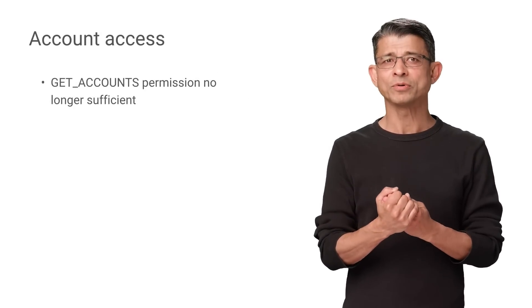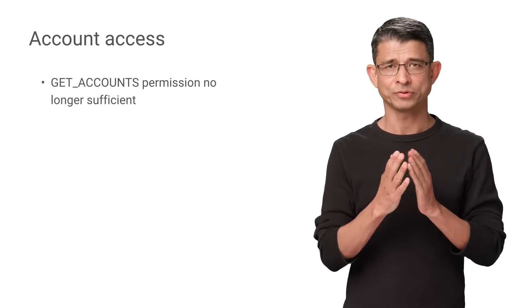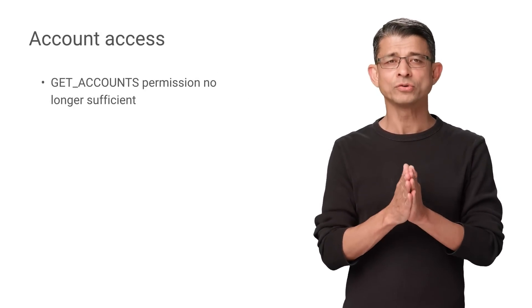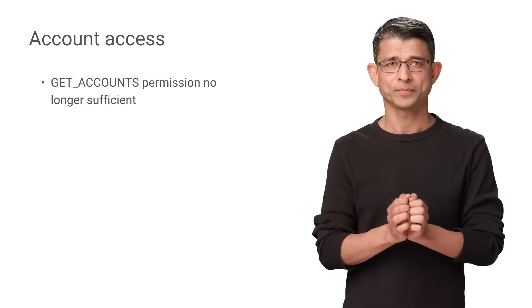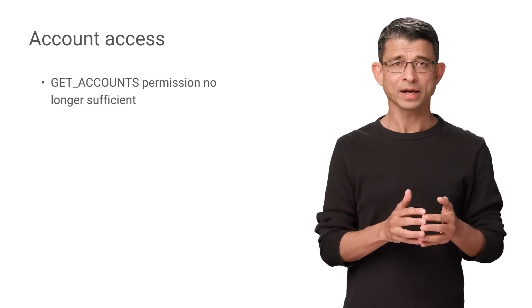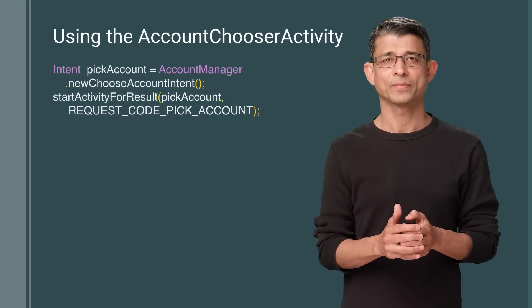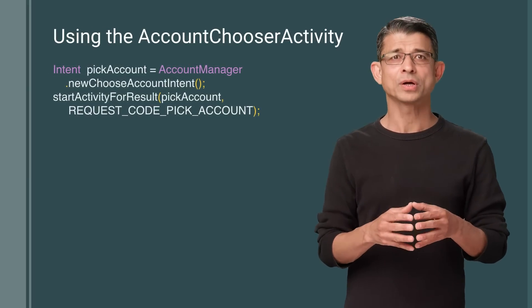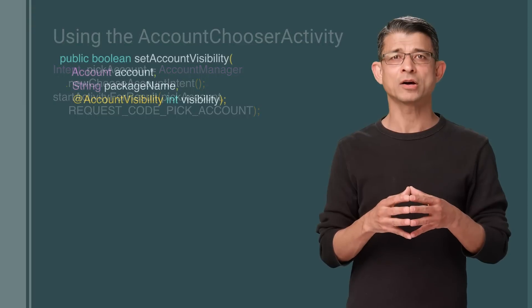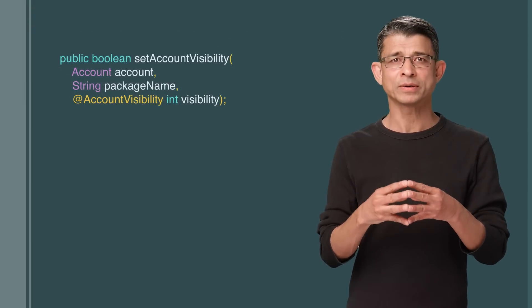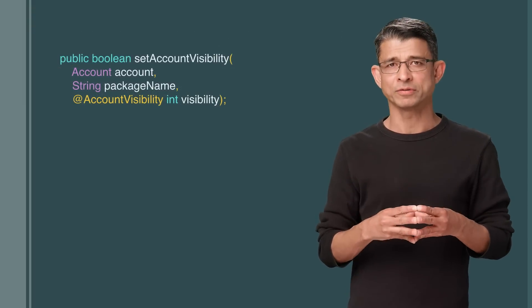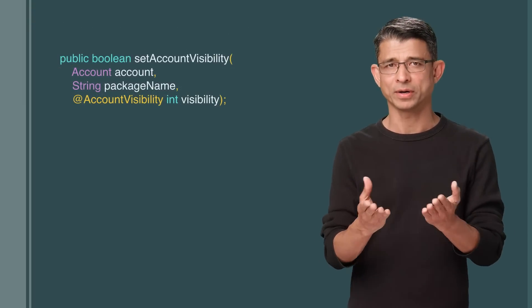Also considering privacy, apps targeting O won't be able to get access to user accounts using get accounts permissions alone. Instead, apps must rely on the account choosing activity. Account owners can now choose whether the accounts will be visible to other apps, and the account choosing activity will be updated accordingly.